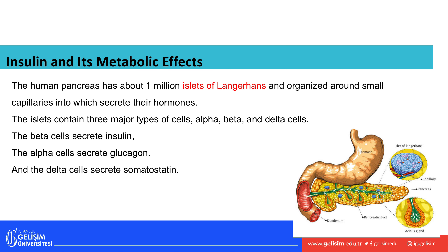Going back to the pancreas — this slide covers insulin and its metabolic effects. The islets of Langerhans are the cells found in the pancreas that form the endocrine portion. Remember, the pancreas is both an endocrine and an exocrine organ. We have about a million islets of Langerhans.